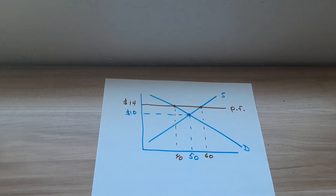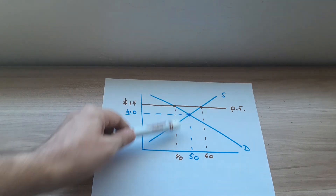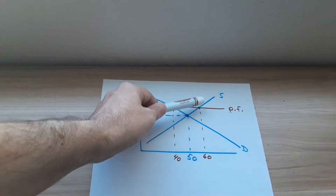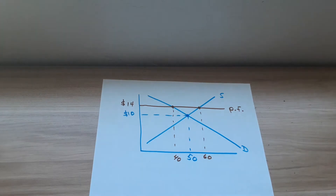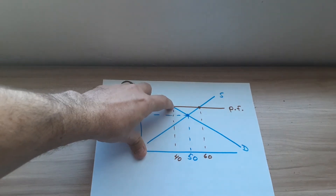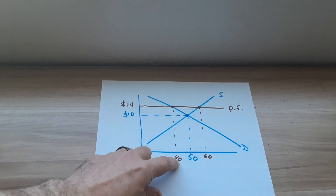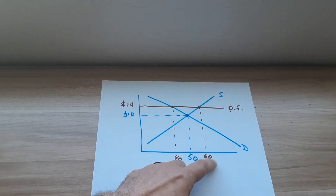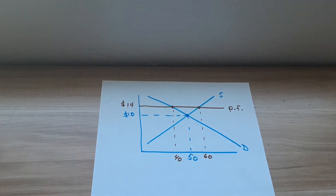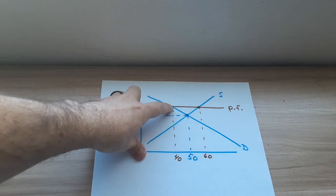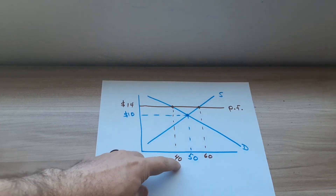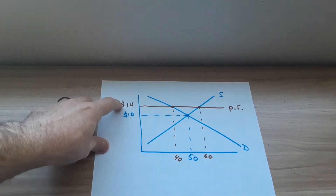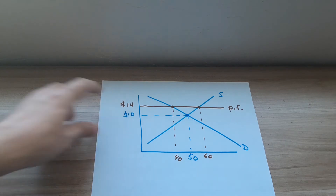We put two dots on the graph. Where it hits the demand curve, you get quantity demanded. Where it hits the supply curve, you get quantity supplied. But where is this market really going to operate? Consumers want to buy 40 units; producers want to supply 60, so we have a surplus of 20 units. But really this market is operating where there's 40 units being bought by consumers at a price of $14 each with this price floor.